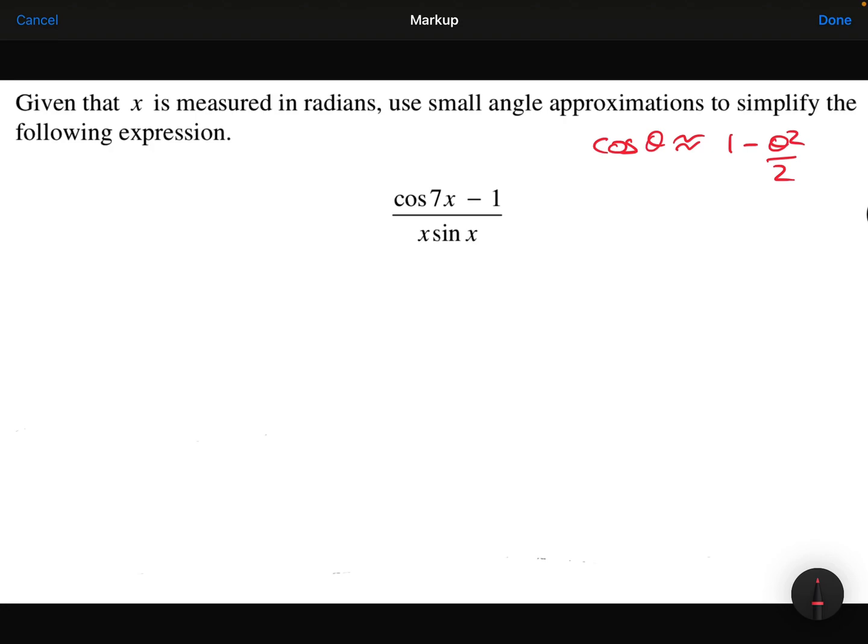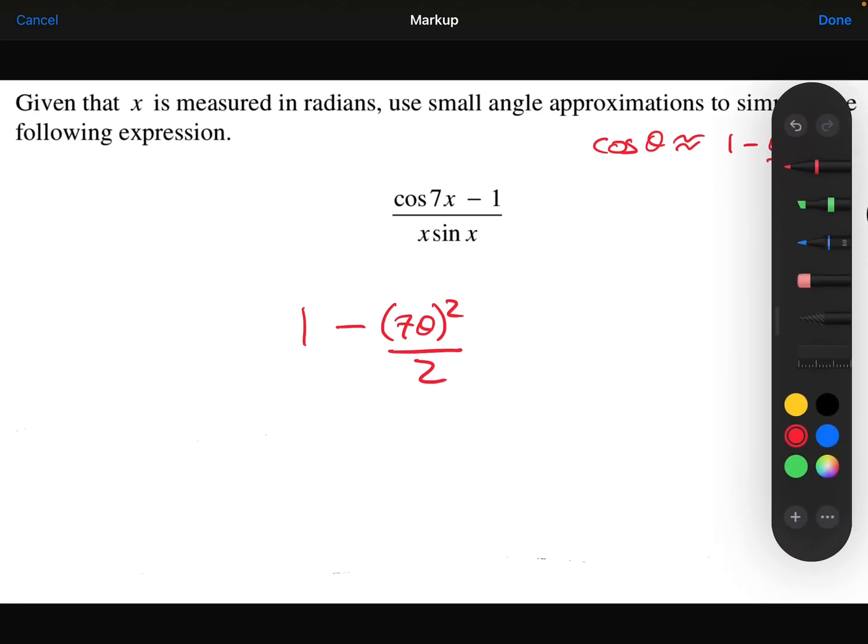So if it's cos 7x, I could approximate that to be 1 minus 7x squared all over 2. Really important here that you're squaring the whole thing, the 7 and the x. So that's my cos 7x. I've then got the minus 1 from here.